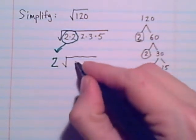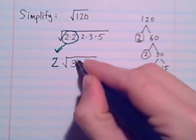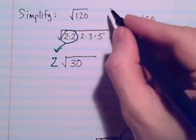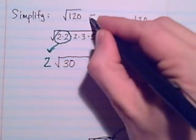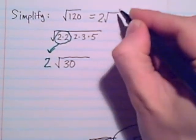2 times 3, 6 times 5, 30. So there's our simplified answer. That square root of 120, when it's simplified, would be 2 times radical 30.